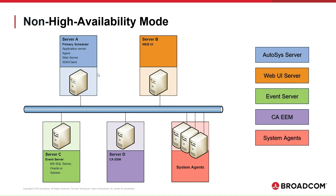Server A is the Autosys server, where the Scheduler, Application Server, Agent, Web Server, SDK, and Client are installed. Server B is the Web UI Server. Server D is the CAEM Server. The system agents are installed on each server where jobs will run.